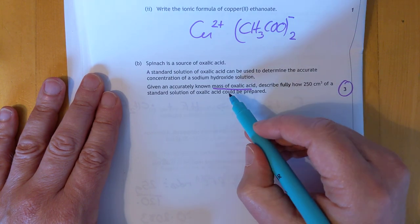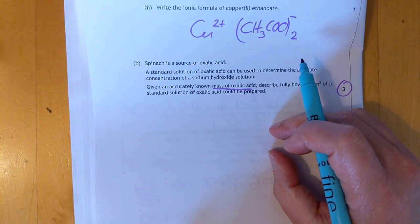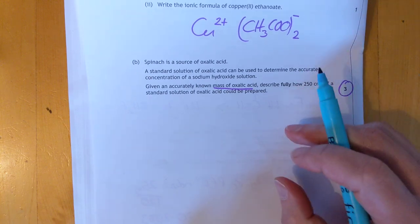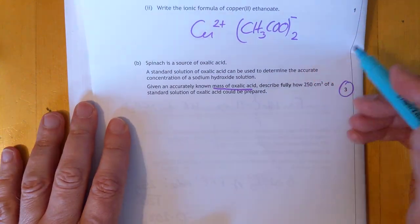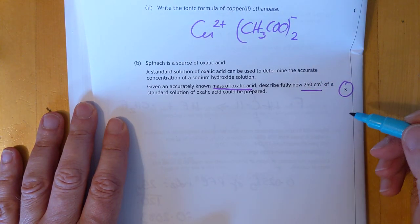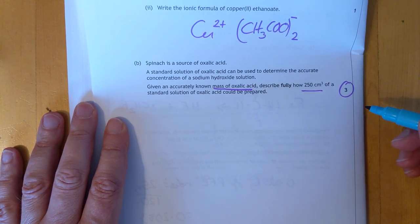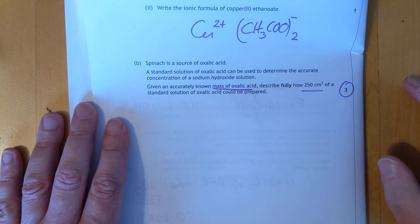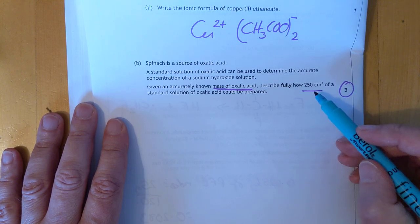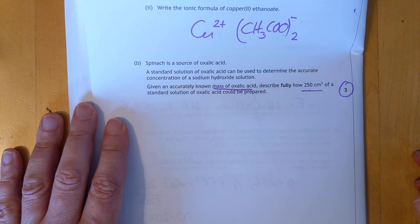Step two is dissolve that mass in a small volume of deionized water. Step three, pour into a standard flask or a volumetric flask. Maybe a 250 mil volumetric flask. I'd love to see how the marking scheme allocates marks here. Step four, after you've poured it into the volumetric flask, you're supposed to rinse your beaker and your stirrer a couple of times with deionized water. Step five, make up to the mark with deionized water in the 250 mil flask. And step six, mix it.